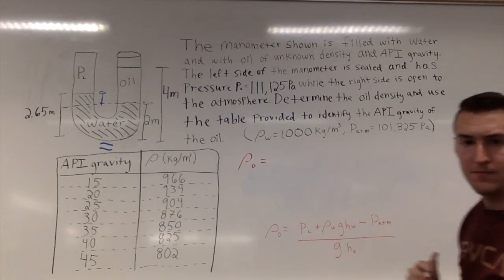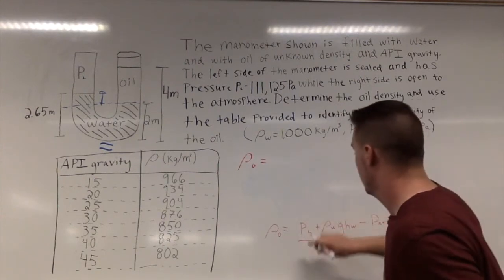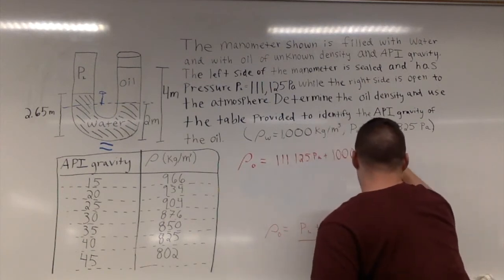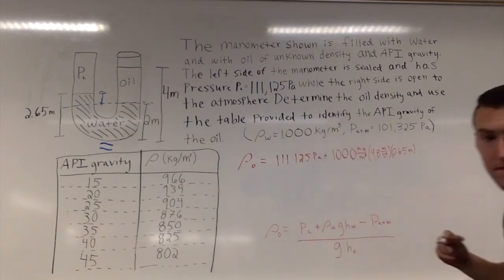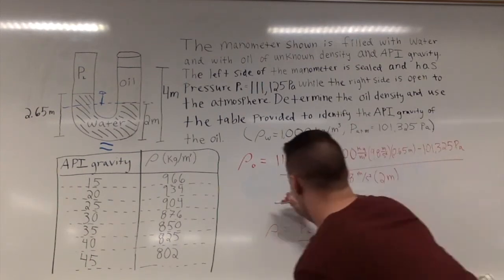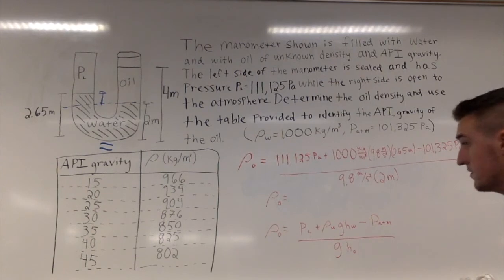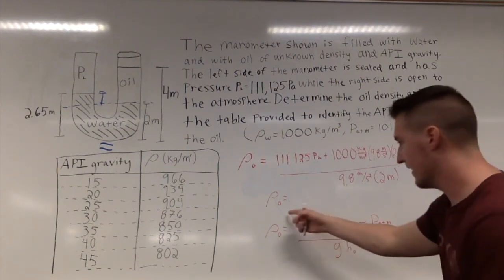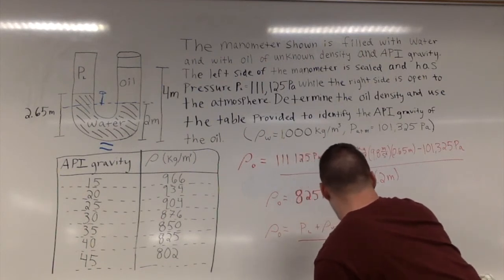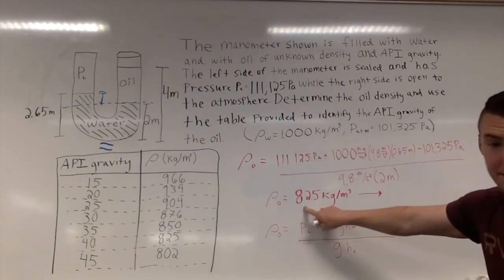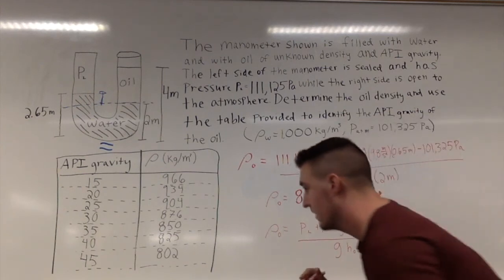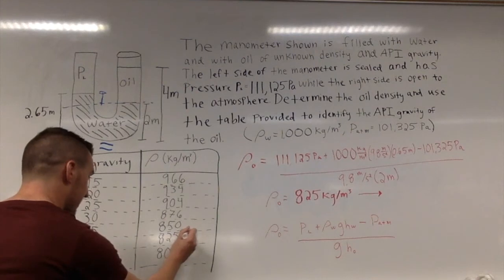Substituting these values... Crunching the numbers, we'll get that the density of oil is 825 kilograms per meter cubed. Going over to our chart here...